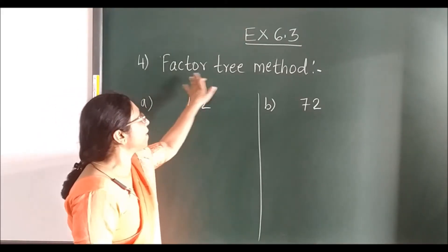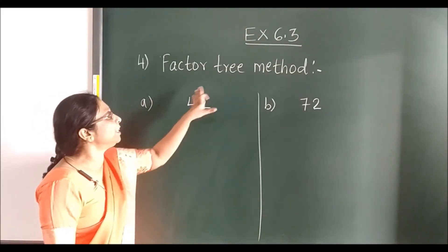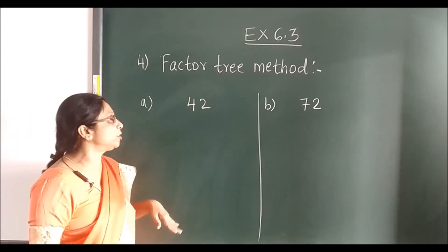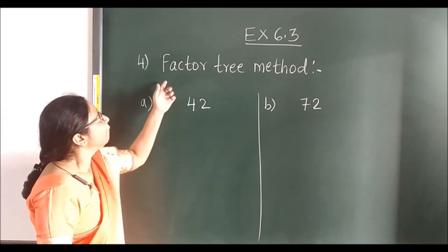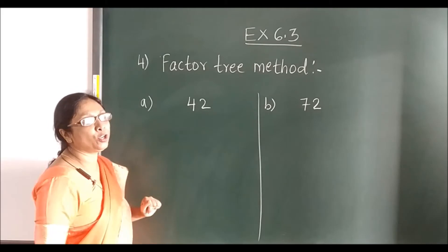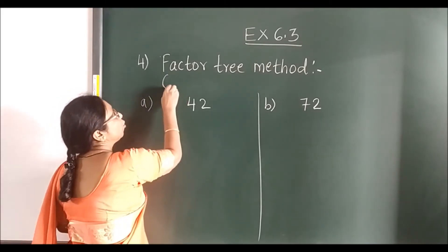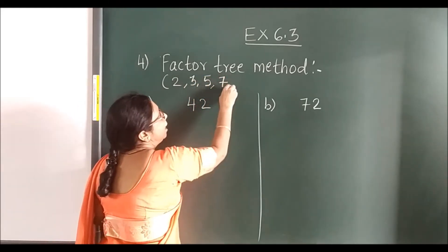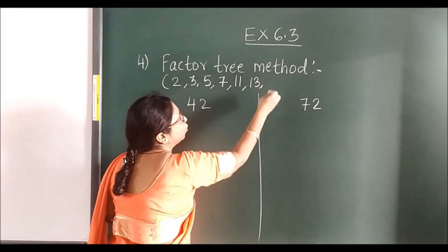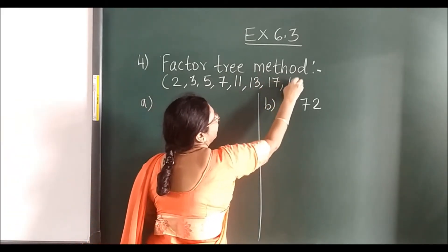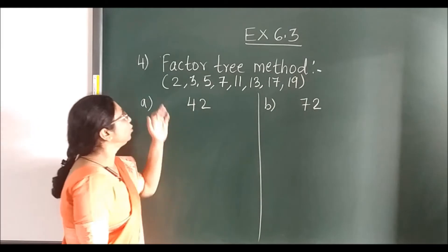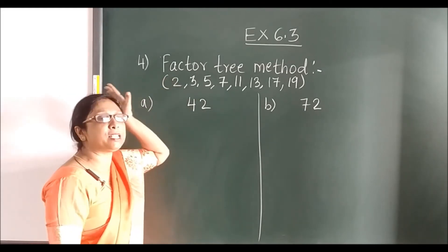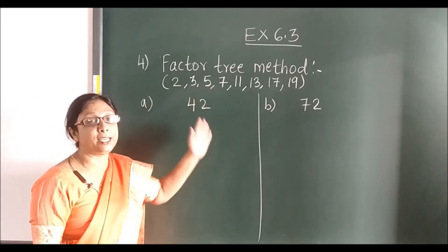Now the factor tree method. The tree represents something that looks like a tree having several branches. One important thing: you have to use only prime numbers in the factor tree method. The prime numbers are: 2, 3, 5, 7, 11, 13, 17, 19. These are prime numbers — they come in their own table only, they don't come in any other table.